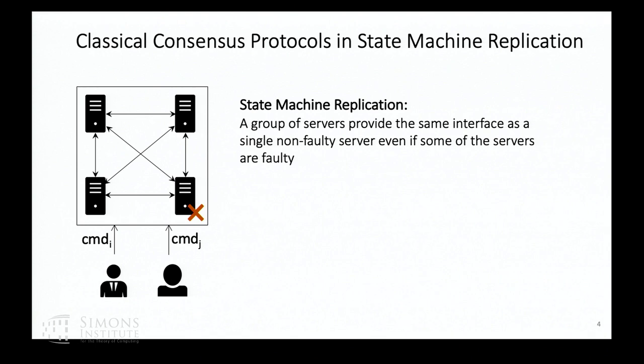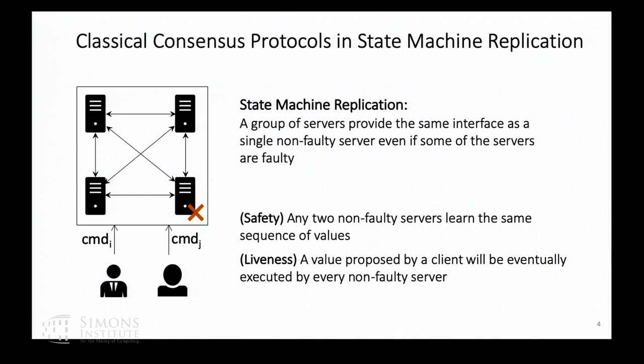In this world, clients send commands to the server replicas. The server replicas first engage in a consensus protocol to agree on a sequence of values, and then execute them on the state machine one by one. More precisely, you require two guarantees: safety and liveness. Safety says that any two non-faulty servers should learn or execute the same sequence of values. Liveness means a value proposed by a client will eventually be executed by every non-faulty server.